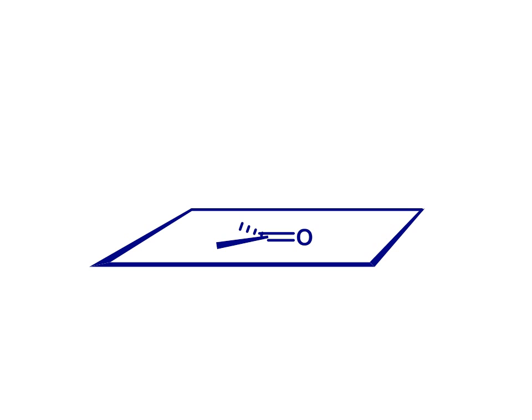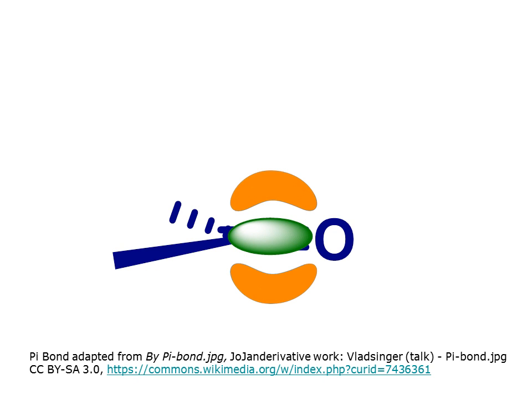Between the carbon and the oxygen there is a sigma bond, localized between the two atoms, and a pi bond, which is localized above and below the plane of the carbon and the oxygen. There are also two non-bonding electron pairs on the oxygen.